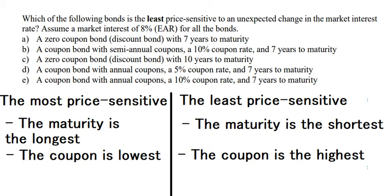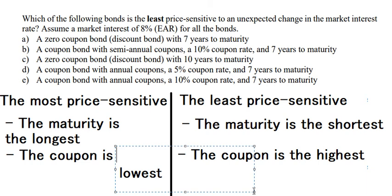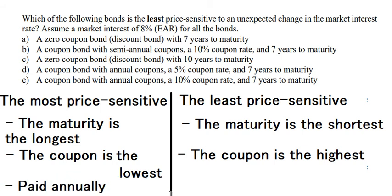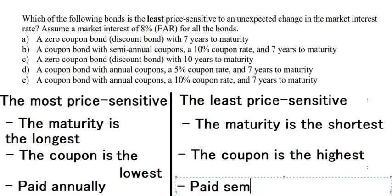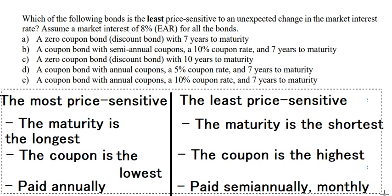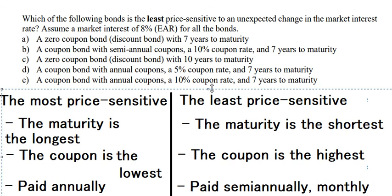For the next criterion, for the most rate sensitive we know that it should pay annually. And for the least rate sensitive, they should pay semi-annually or maybe monthly. So this is the best way to compare the most and the least rate sensitive. We will use this table to compare, following the order from number one to number three.